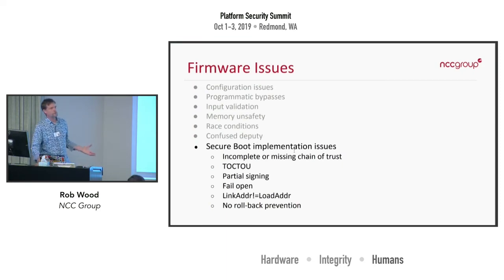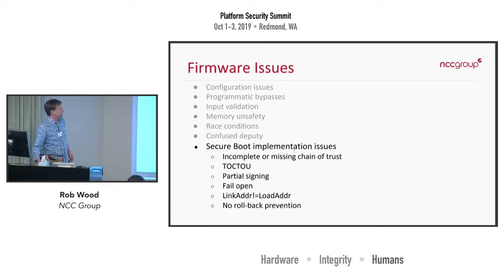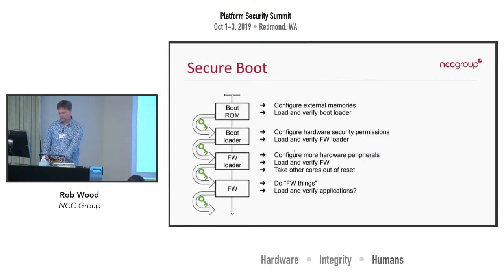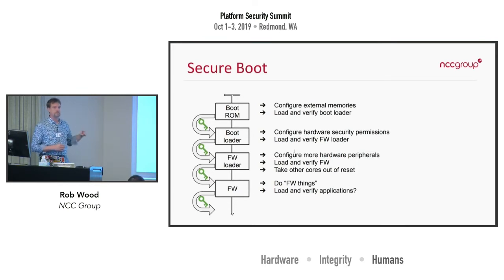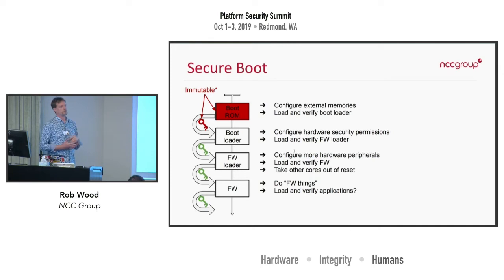Secure boot is about how you get your firmware bootstrapped from power-off to running known good code. The process has some internal ROM that loads the boot loader, which loads a secondary loader, and then the firmware. This whole sequence is predicated on having public keys you can use to validate the signature of each stage, and importantly you've got this first stage which is immutable — write-protected or locked — which we call a trust anchor or root of trust.